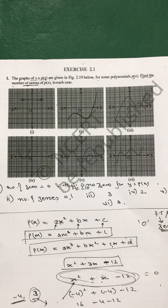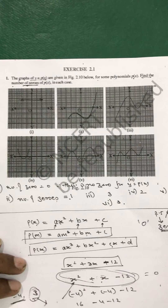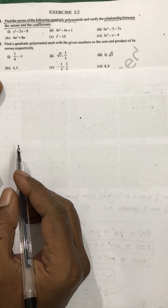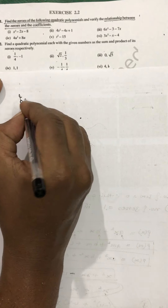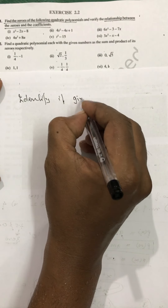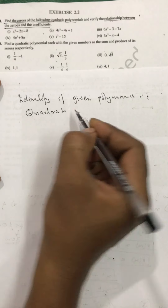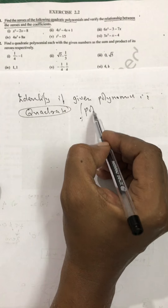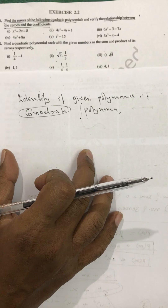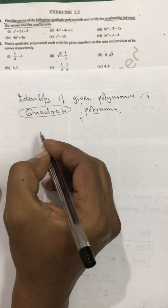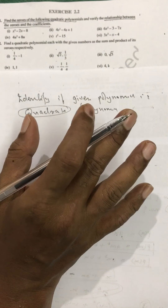My dear students, this topic is very short — just an introduction. One more basic thing to complete: a question that sometimes comes is to identify if a given expression is a polynomial or a quadratic polynomial. Remember, whether a given expression is a polynomial depends only on the power of the variable. The power of the variable is what decides.